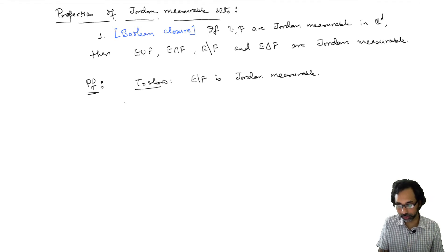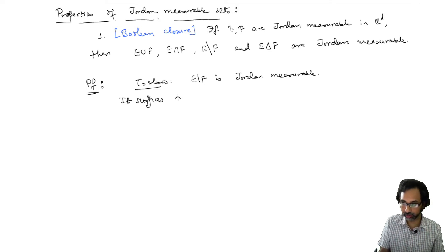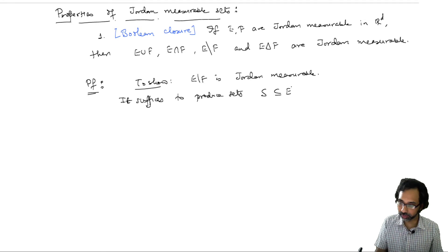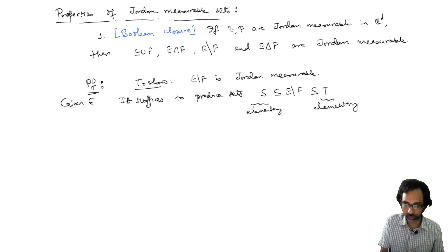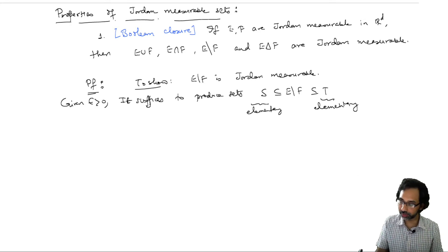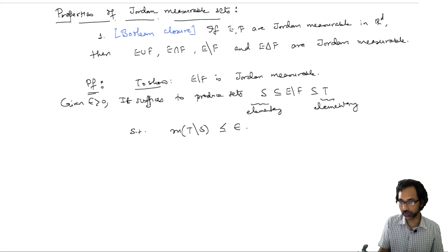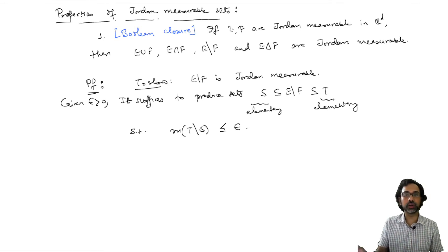To show this, it suffices to produce sets S and T, both elementary, such that given epsilon greater than 0, one can sandwich E minus F between two elementary sets S and T such that the measure of T minus S is less than or equal to epsilon. This was the second equivalent condition for Jordan measurability from our previous theorem.